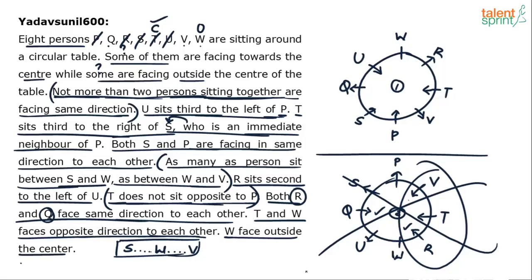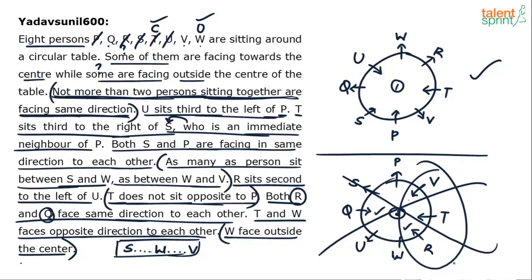Case 1 is the only correct arrangement. W faces outside the center as stated. The arrangement is now complete. The key challenge was not knowing how many persons faced center versus outwards, but the constraint 'not more than 2 consecutive persons face the same direction' was critical in eliminating Case 2, where V, T, and R all faced center consecutively. It's about reading between the lines and finding those hidden clues.